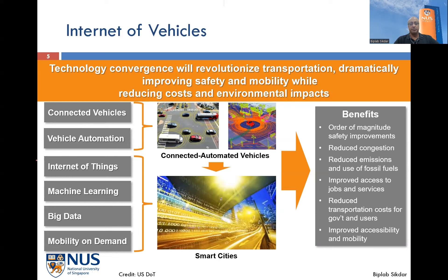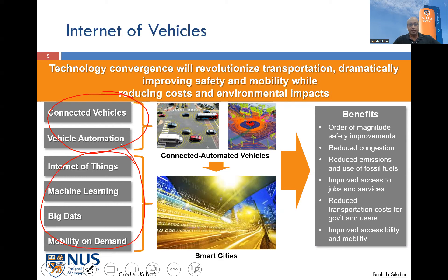Starting with connected vehicles and vehicle automation, the use of connected vehicles and vehicle automation, along with all the things associated with the collection and processing of data, come together in the Internet of Vehicles. The benefits we can expect include reduction of congestion and emissions, reduced travel time, improved accessibility, and improvement in safety and security.